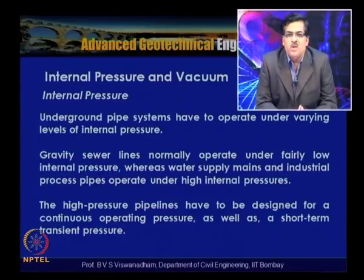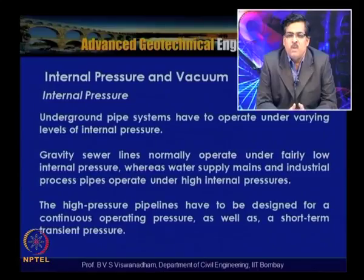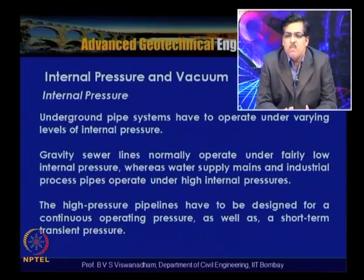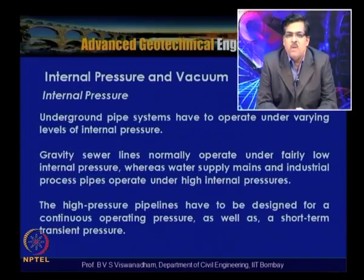Another important loading consideration is internal pressure. Underground buried pipes operate under two categories: high pressure pipes and low pressure pipes. Gravity sewer lines normally operate at fairly low internal pressures and are classified as low pressure pipes, whereas water supply lines and industrial process pipes operate under high internal pressures, such as cooling water pipelines in power plants.